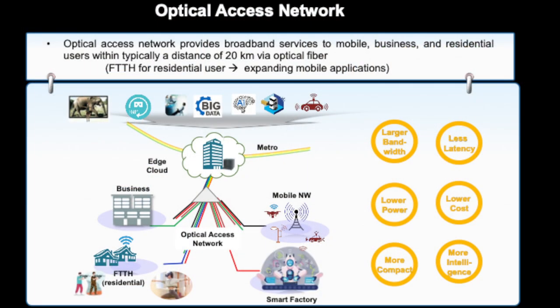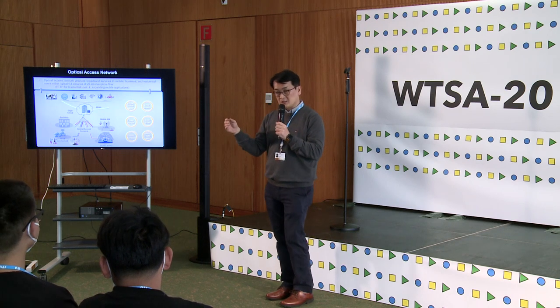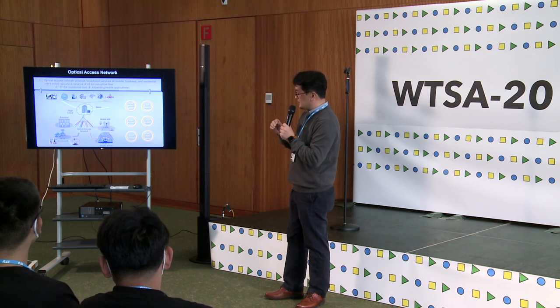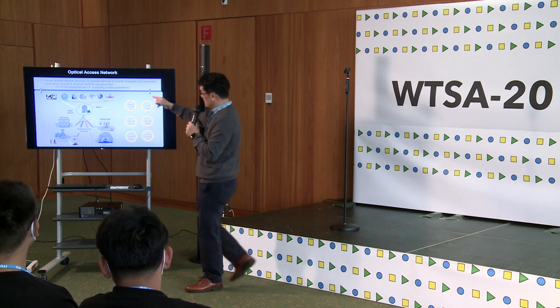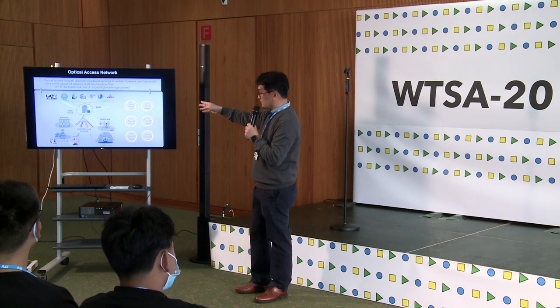This shows the structure of an optical access network. On one side is the edge cloud or communication building at the carrier, and on the end side we have 5G, fiber-to-the-home, smart factory, mobile base stations, and so on. The typical distance is around 20 kilometers, and the speed is nowadays around 10 or 25 gigabits per second. To support these new applications, we need many innovations.